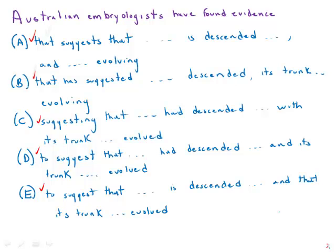When we read through the prompt we notice a failure of parallelism: we have 'is descended,' a verb, and 'evolving,' a participle — so that is a failure of parallelism. Parallelism is one of the favorites of the people who write the GMAT, so when the prompt has a failure of parallelism, that's like a big neon sign saying 'fix the parallelism.' We need correct parallelism, so let's start focusing there.